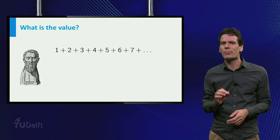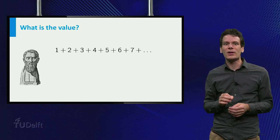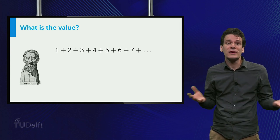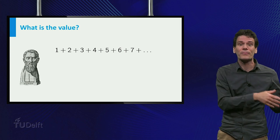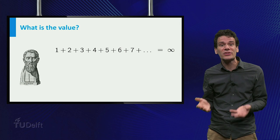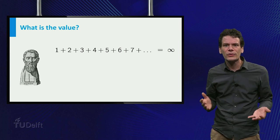However, Zeno does have a point. Adding infinitely many numbers may lead to infinity and can be very subtle in general. Think of the sum 1 plus 2 plus 3 plus 4, etc. It keeps growing, and it will become infinitely large in the limit. And what do you think of the following series?